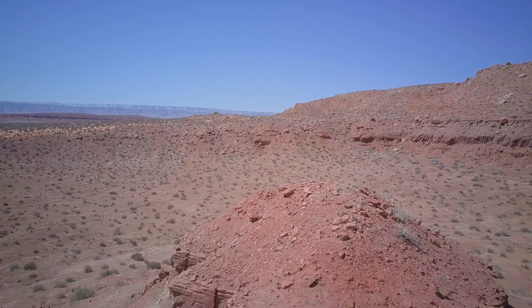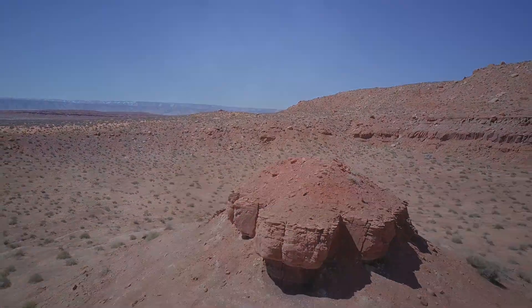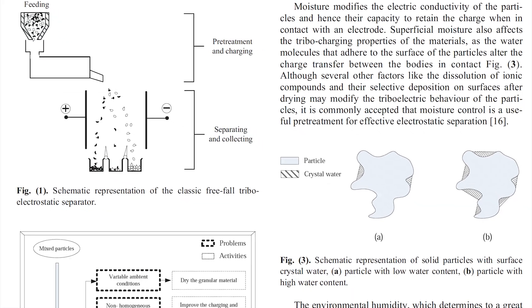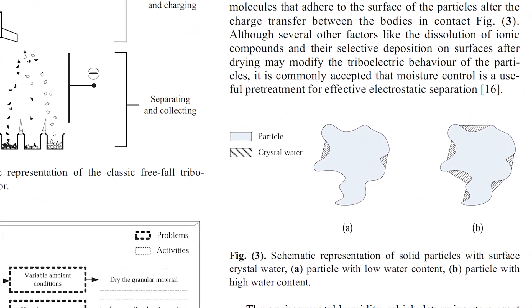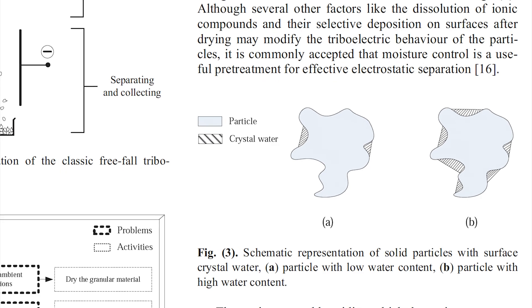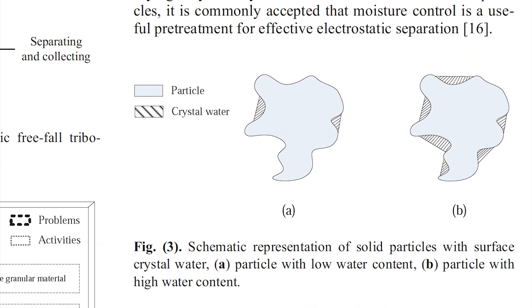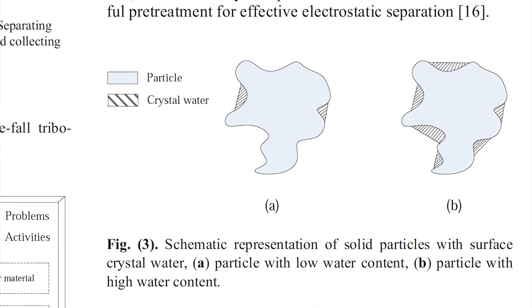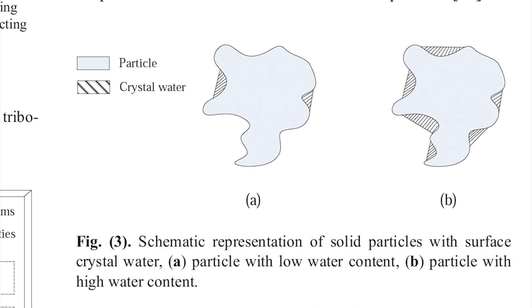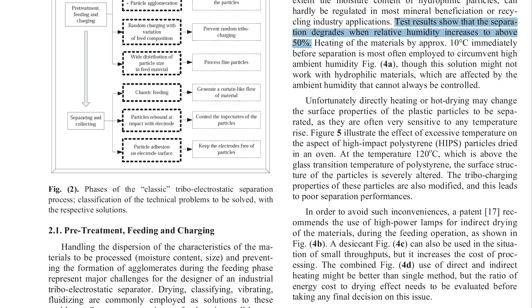One of the most critical pre-treatment steps in static separation is drying the granular material. Moisture modifies the electric conductivity of the particles and hence their capacity to retain the charge when in proximity to an electrode. Superficial moisture also affects the tribocharging properties of the materials, as the water molecules that adhere to the surface of the particles alter the charge transferred between the bodies in contact.